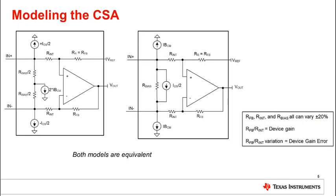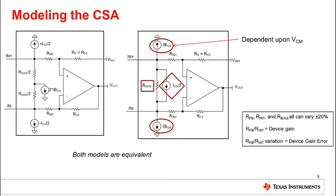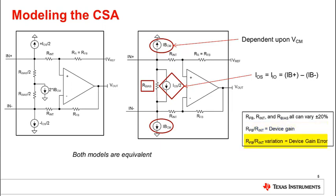Here are two ways to model a current sense amplifier for input filter error analysis. Input bias resistance R_bias generates the majority of the input differential bias current, while common mode input bias current sources create the common bias current and are dependent upon the input common mode voltage of the device. Input offset current IOS, also referred to as IIO, equals the difference between the input bias currents for each input pin. The absolute value of internal resistors in the device can vary by plus or minus 20% over process variation. Device gain accuracy is maintained because the ratio of the feedback resistor RFB over Rint is trimmed to establish an accurate gain. Thus, the variation in the ratio of RFB over Rint is the device's gain error from the datasheet.